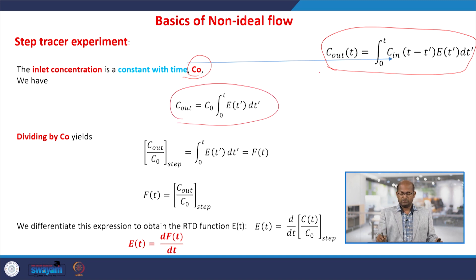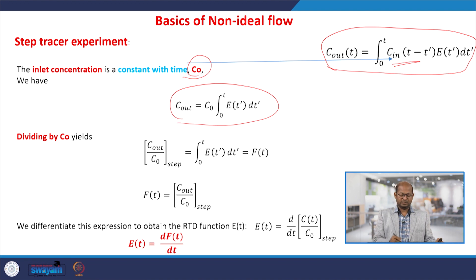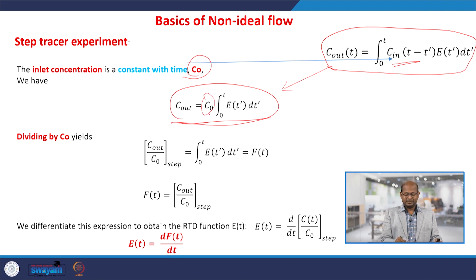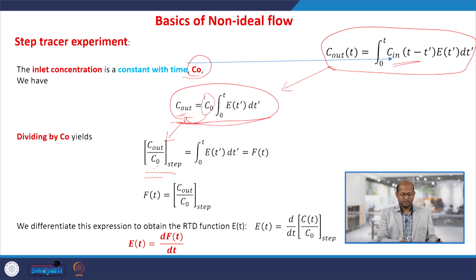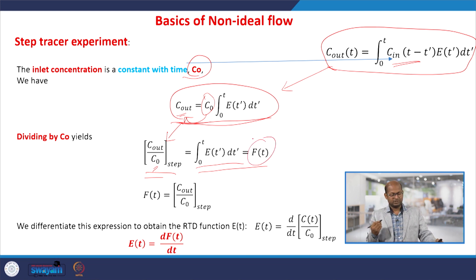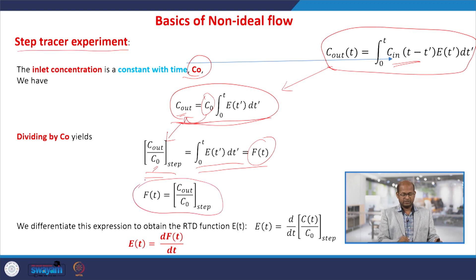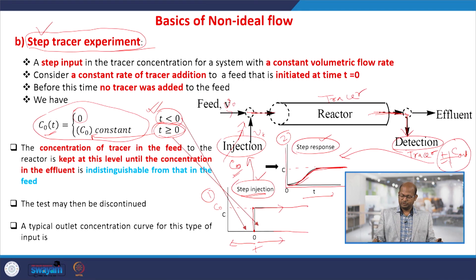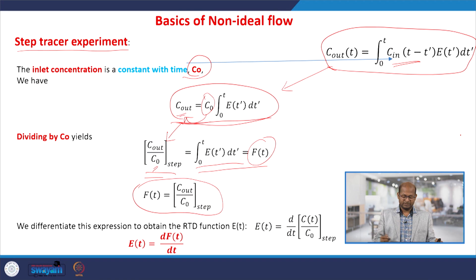The concentration out — if the inlet concentration (initial concentration of the tracer injected in the feed line) is constant, therefore C_0 can be taken outside the integration. So we can write the convolution integral this way. If we divide C_out by C_0, then we get C_out/C_0 for the step experiment — the ratio of output concentration to the initially injected concentration. The right-hand side equals F(t), the cumulative distribution function for step tracer experiments. F(t) is found by dividing outlet concentrations by the initial concentration at different times.